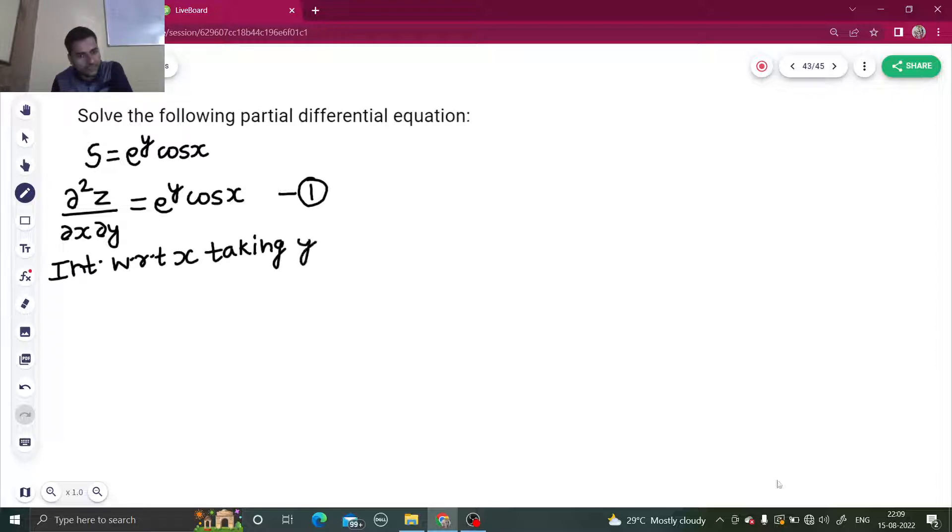...other variable, which is y, as constant. So you are left with now ∂z/∂y after integration equals integral of e^y cos x. A constant will also come since we are integrating, so that will be in terms of y.